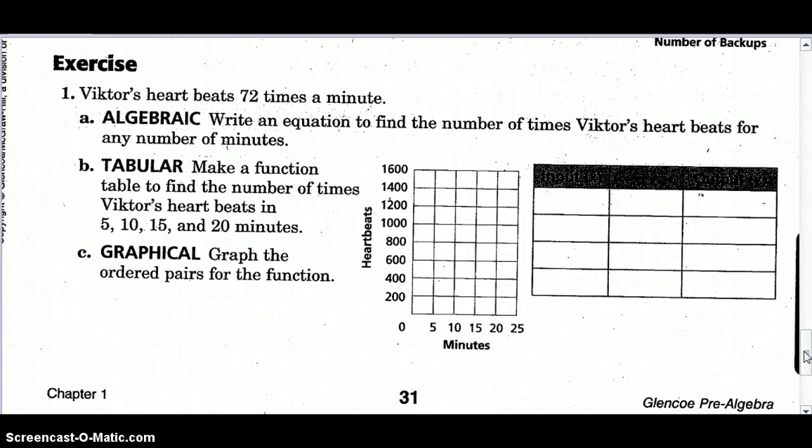So here's a problem for us to work. Victor's heart beats 72 times a minute. Write an equation to find the number of times Victor's heart beats any number of minutes. So I'm going to need to define my variables. I'm going to let m stand for minutes. I'm going to let h equal his heart beats. So for question A, make an algebraic equation 72 times for every minute. That's how many heart beats. Victor's heart beats 72 times a minute. So in 2 minutes, his heart will have beaten 144 times. So there's my equation.